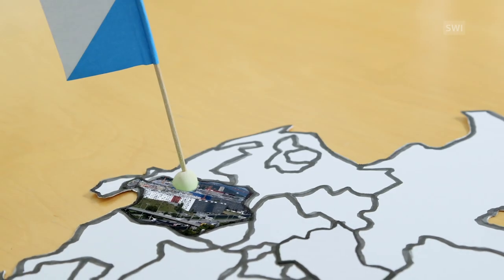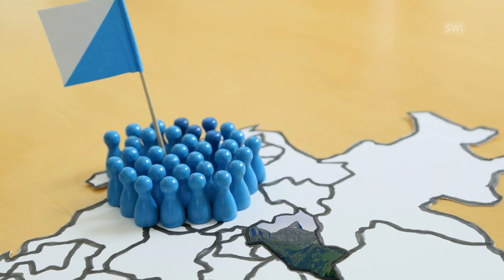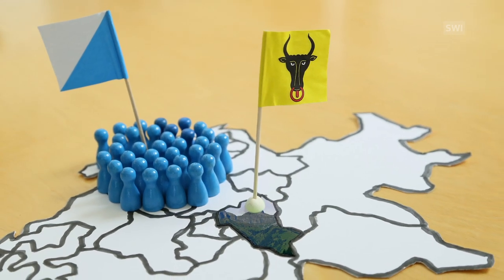The canton of Zurich, with over one million inhabitants, has 35 seats. While Uri, a canton with only 36,000 inhabitants, has one.